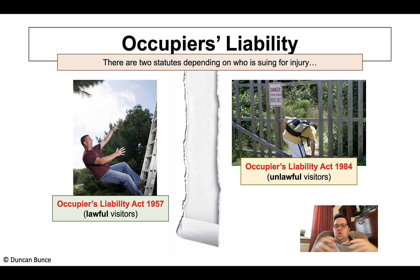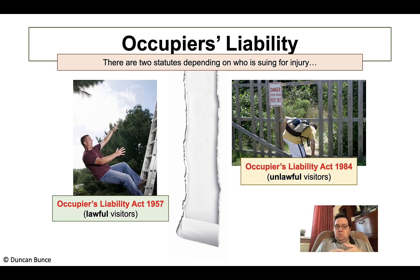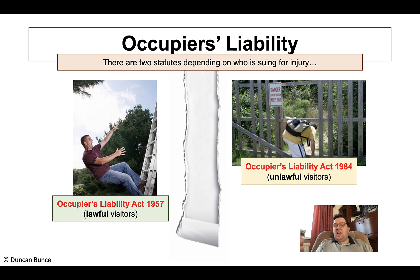For Paper 2 tort, remember that everything is born out of the defendant's negligence. So in both instances, the claimant — for example, under the 1957 Act — brings a claim because they were lawfully allowed on the premises of the defendant, but due to the defendant's negligence they were injured. That negligence, typically for both, amounts to not keeping that person on your premises reasonably safe.